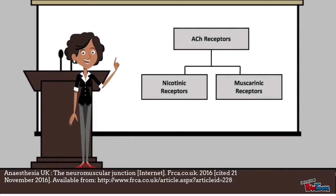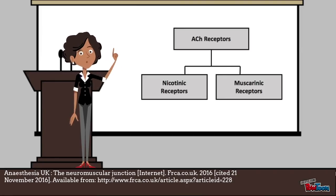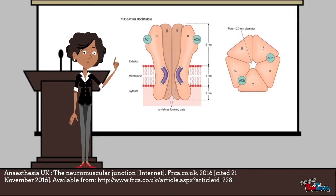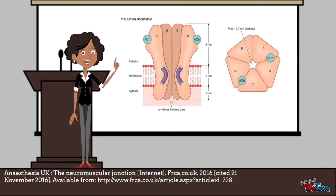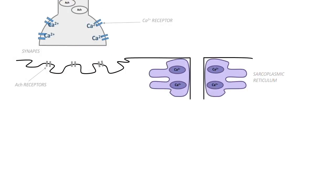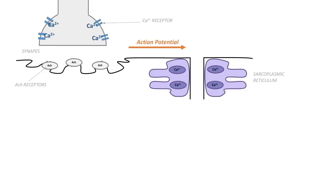There are two types of acetylcholine receptors: nicotinic and muscarinic. For the purposes of succinylcholine, we will be looking at nicotinic receptors. Nicotinic receptors are ligand-gated channels that form pores in the cell's postsynaptic membrane and are involved in mediating fast synaptic transmission at the synapse. Usually, acetylcholine is released and diffuses across the synaptic cleft and attaches to acetylcholine receptors on the sarcolemma, which initiates an action potential.